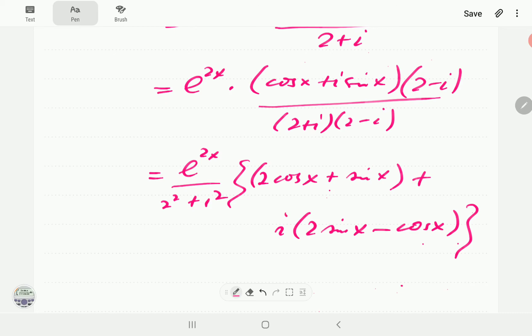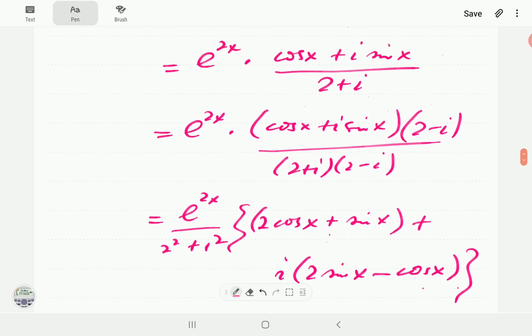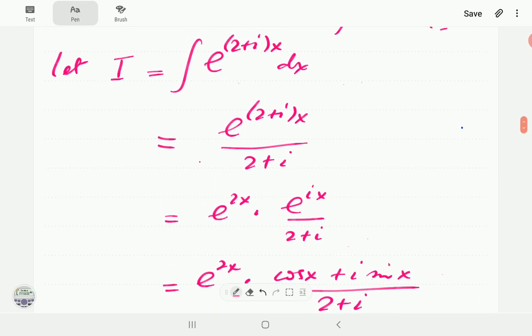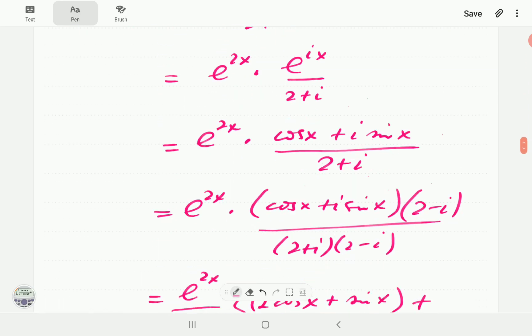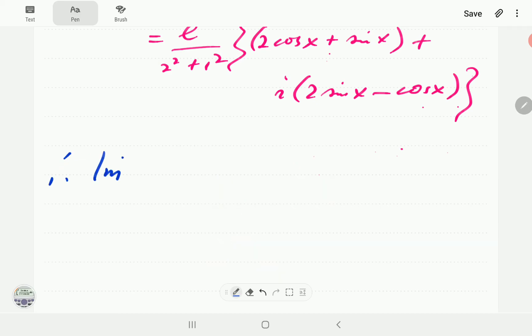Now therefore, the imaginary part of this whole thing here. So we're just going to do imaginary part of I. So therefore, the imaginary part of I is just going to be e to the 2x over 5, which is this 5 here.